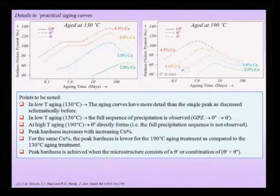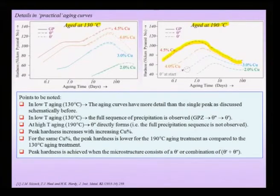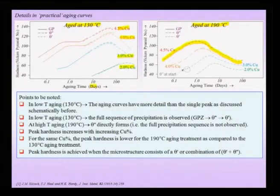The hardness versus aging time curve in reality depends on the aging temperature and the copper percentage. At 130°C the curves have more complex features than a simple single peak, while at 190°C a classic single-peak curve is obtained. These actual curves — plotted with hardness versus time in days — show details hidden in the schematic master curve that simply shows hardness increases then decreases with over-aging.